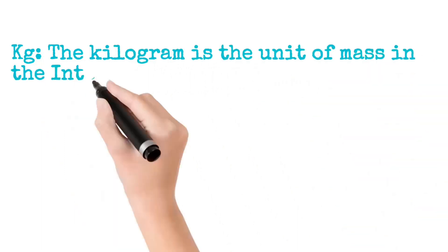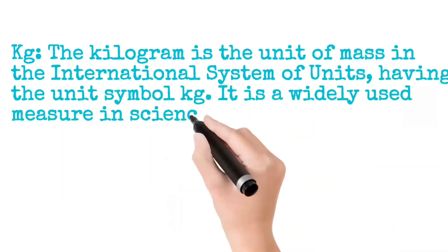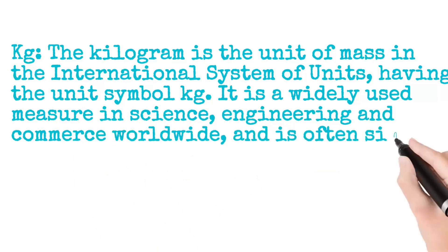Kilogram is a unit of mass in the International System of Units, and 1 kilogram is equal to 1000 grams.